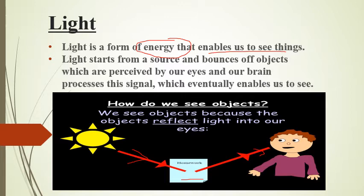Suppose in a dark room, things are there, but we can't see them — why? Because there is no light. When you turn on the light, we can see things. So due to light and because of reflection, we are able to see things.